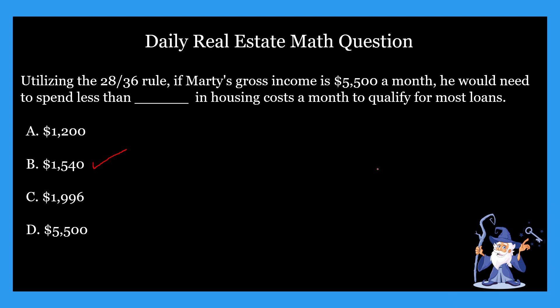So how did we get that? In most 28 by 36 problems, you multiply by either 0.28 or 0.36. In this problem we need to multiply by 0.28. Why 0.28 and not 0.36? Because the question gives us their monthly income and it's asking about housing costs — and that's really important; I encourage you to underline that on test day. If it's housing costs, you multiply by 0.28. If it's asking about total household debt, you multiply by 0.36. You just have to diagnose which type of problem it is, and then you can do the math.